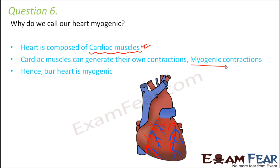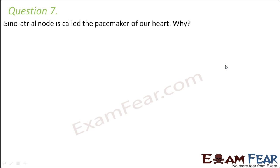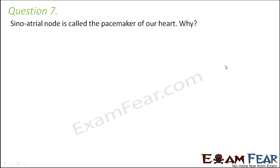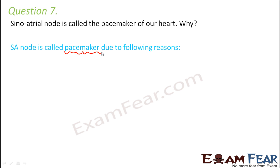Question number seven: the sinoatrial node is called the pacemaker of our heart — why? 'Pace' means speed and 'maker' means creator, so it is the creator of speed. It initiates and coordinates the rhythmic contractions of the heart. It generates electrical impulses for the first time; when these impulses are generated, the auricles contract, and then the impulses are conducted to the ventricles through the bundle of His, causing the ventricles to contract as well.